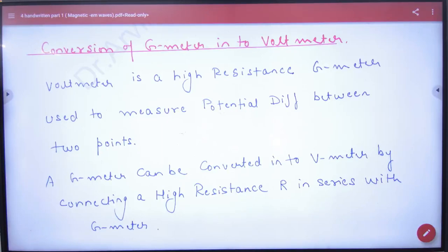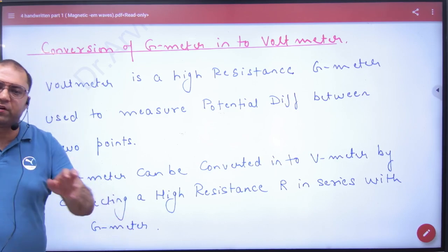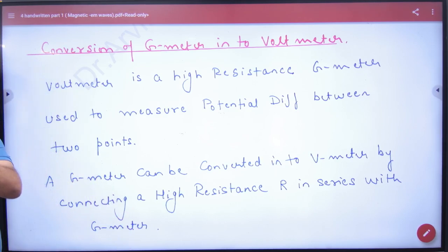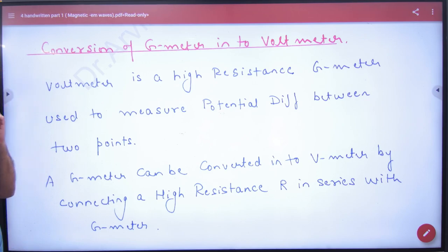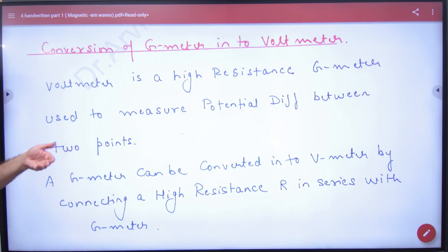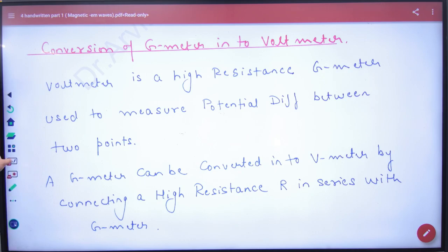Conversion of galvanometer into voltmeter. To convert to a voltmeter, we need to measure voltage. The problem is that a voltmeter is a high-resistance galvanometer. It is used to measure potential difference between two points. I will practically explain what happens.